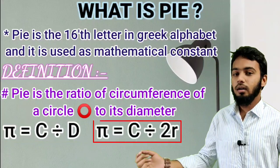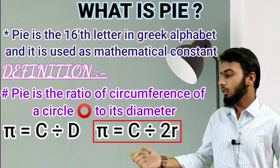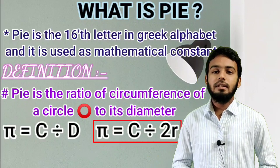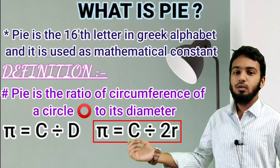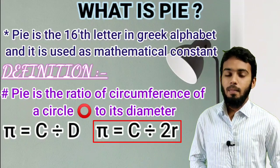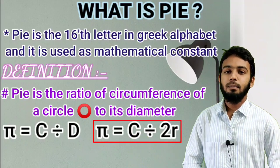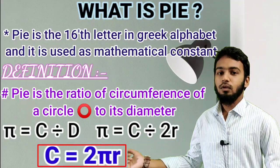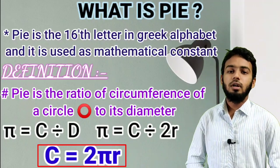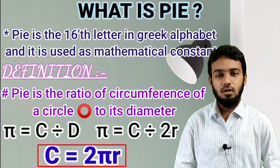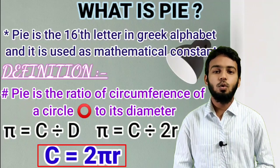In the place of D, we write 2R. Diameter equals 2 times the radius. That is why we write D equals 2R. If we cross-multiply here, it becomes C equals 2πR. This is a very important formula to find the circumference of a circle.